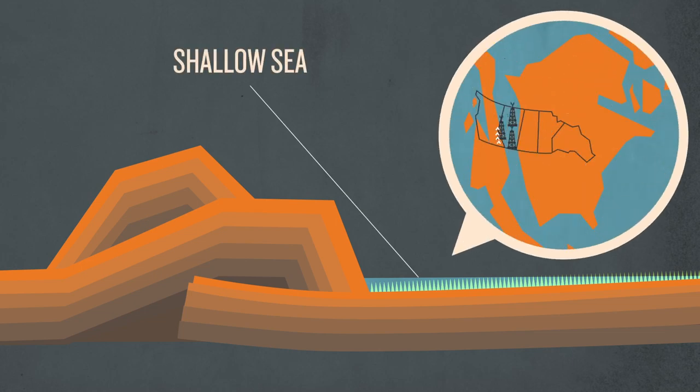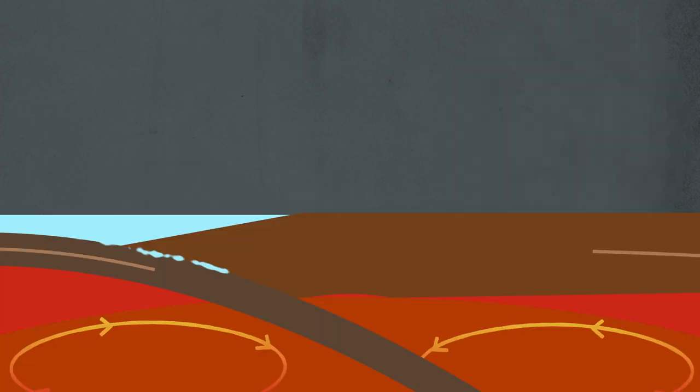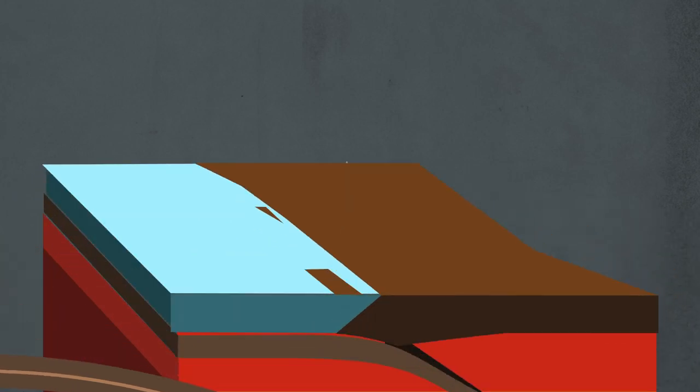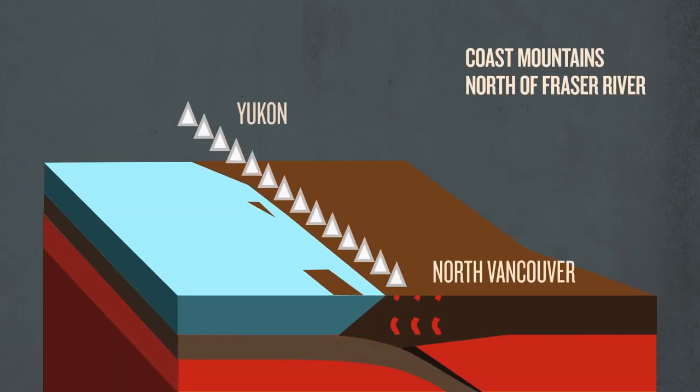Buried masses of plants would become our oil and gas. Rock and water slid under the continent. Melting crust created a volcanic arc and raised the coast mountains, one of the largest granite forms stretching from North Vancouver to the Yukon.